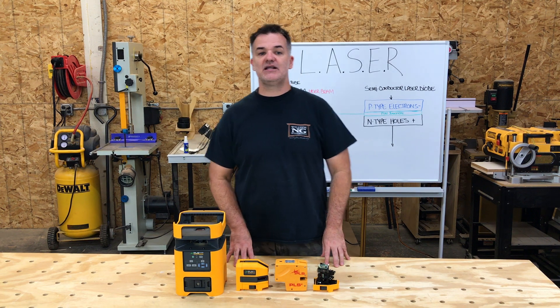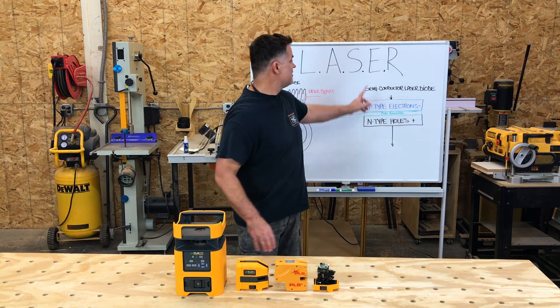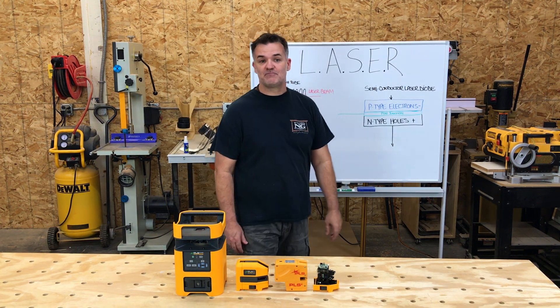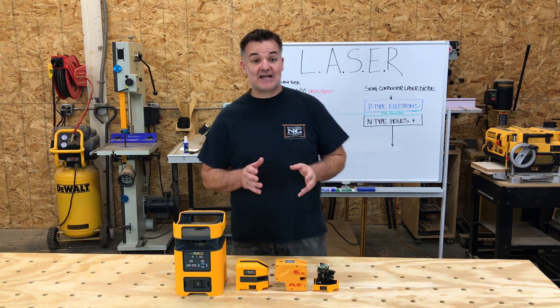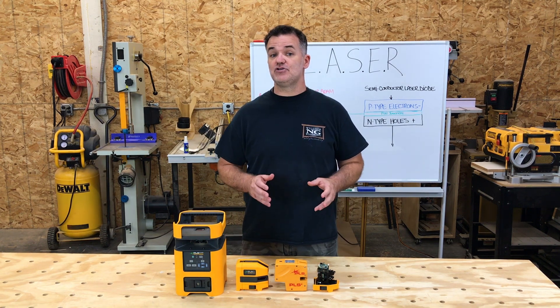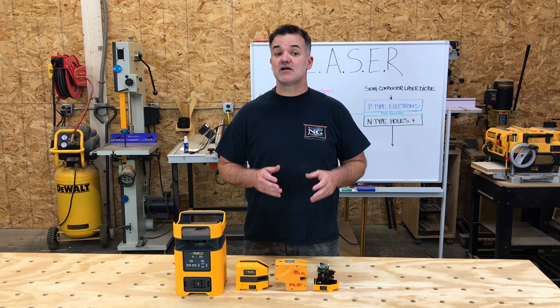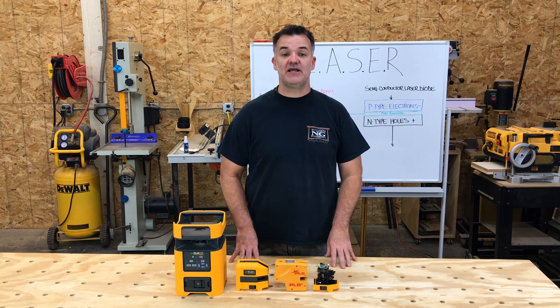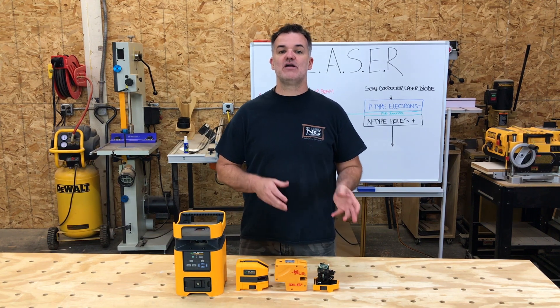This is called stimulated emission — the SE part of laser. Next is light amplification, the LA part of laser. Reflective material is used to amplify the photons, causing more stimulated emission and directing the coherent light — which means the light waves are in phase and traveling in the same direction — of the laser in a narrow beam.